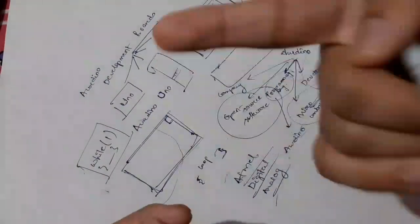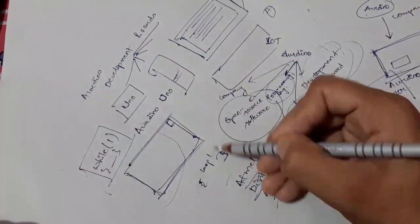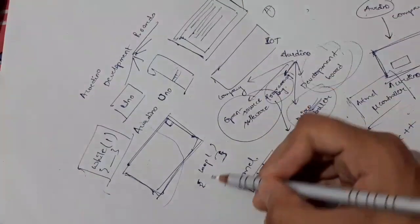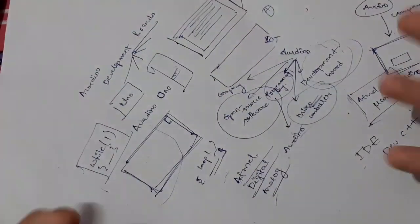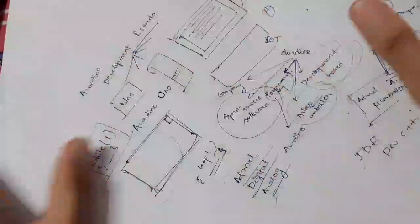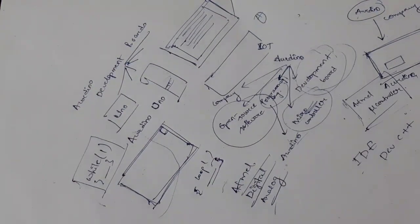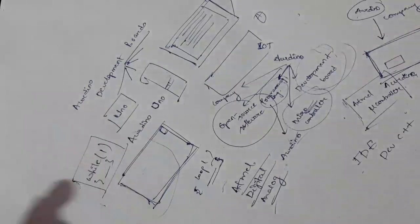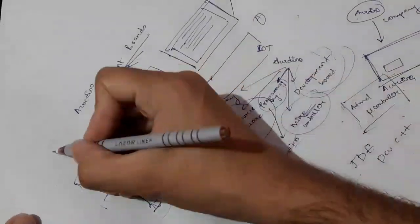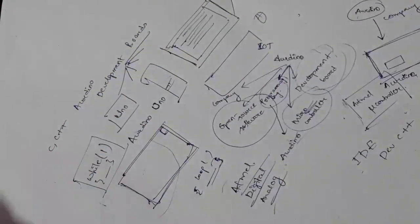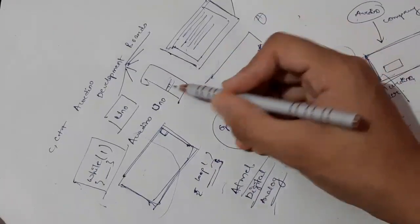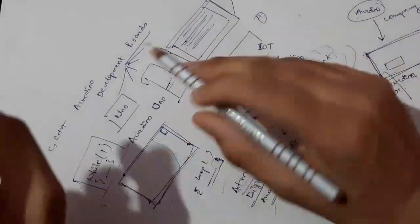So that is the basic coding syntax of Arduino. It is actually a mixture of C and C++ syntax. You have data types just like in C and C++.